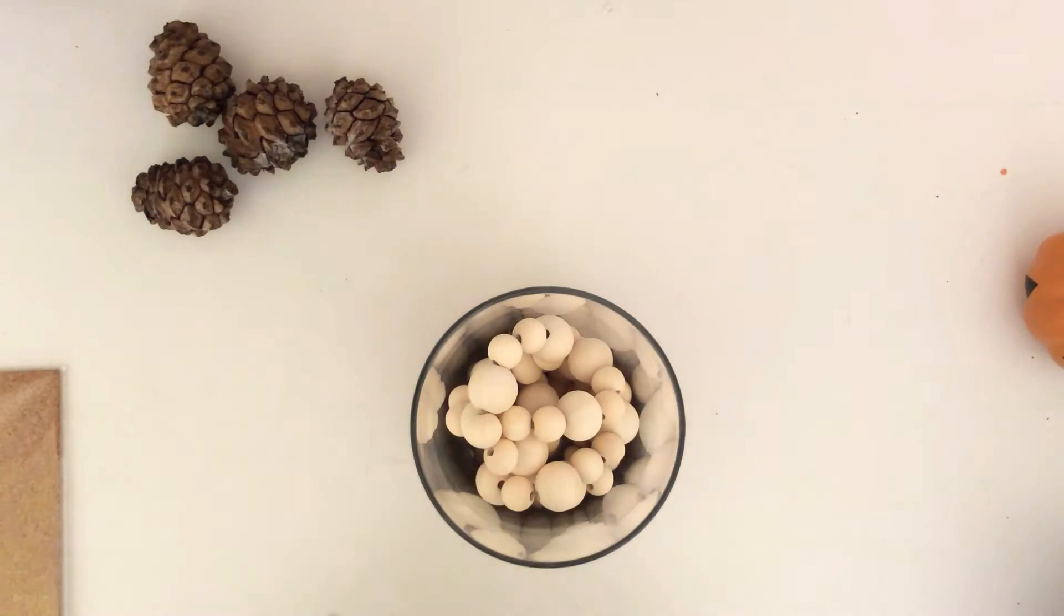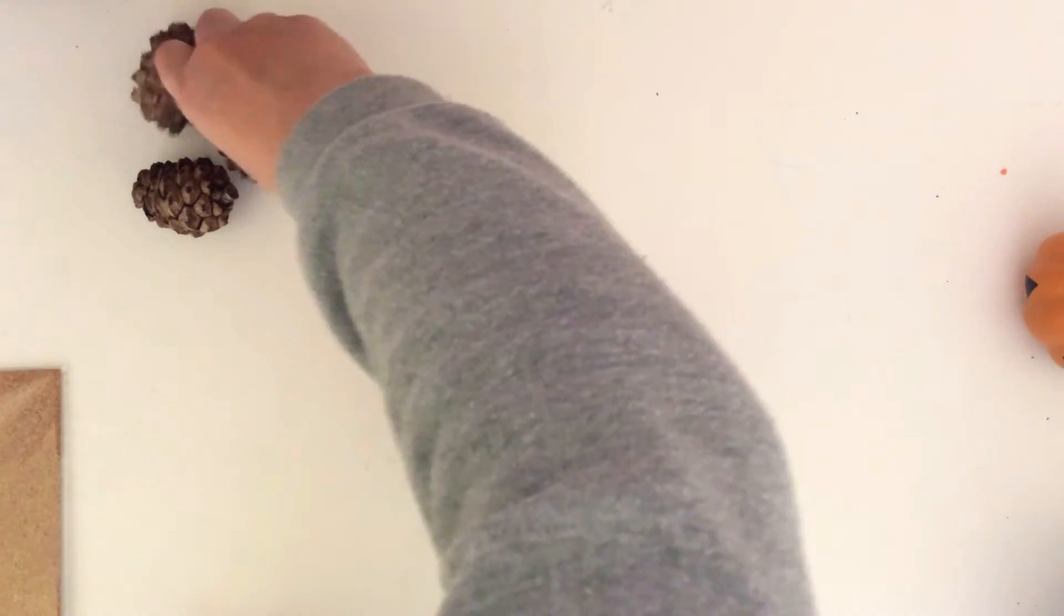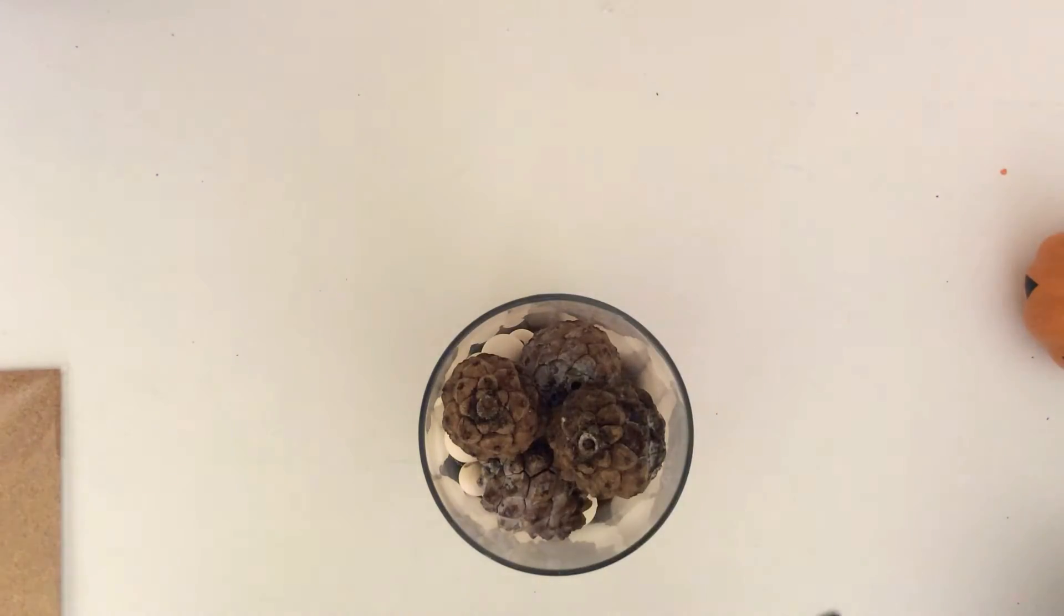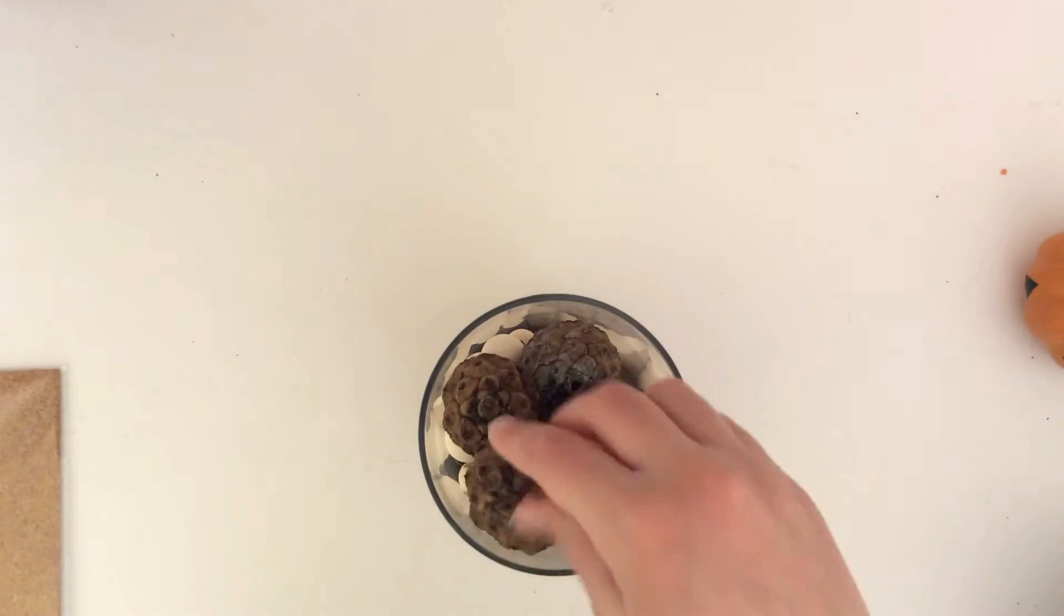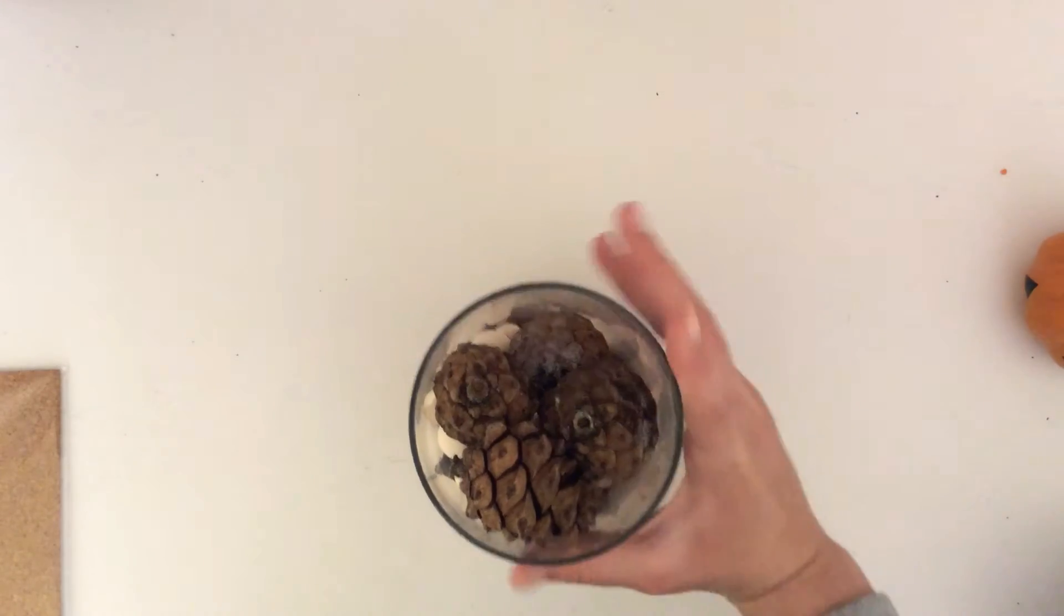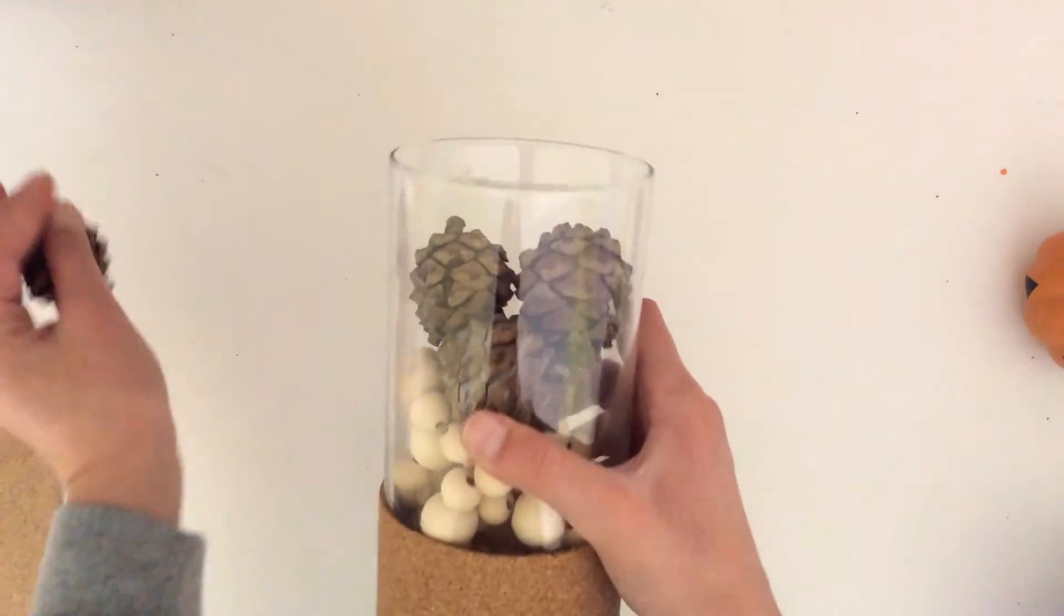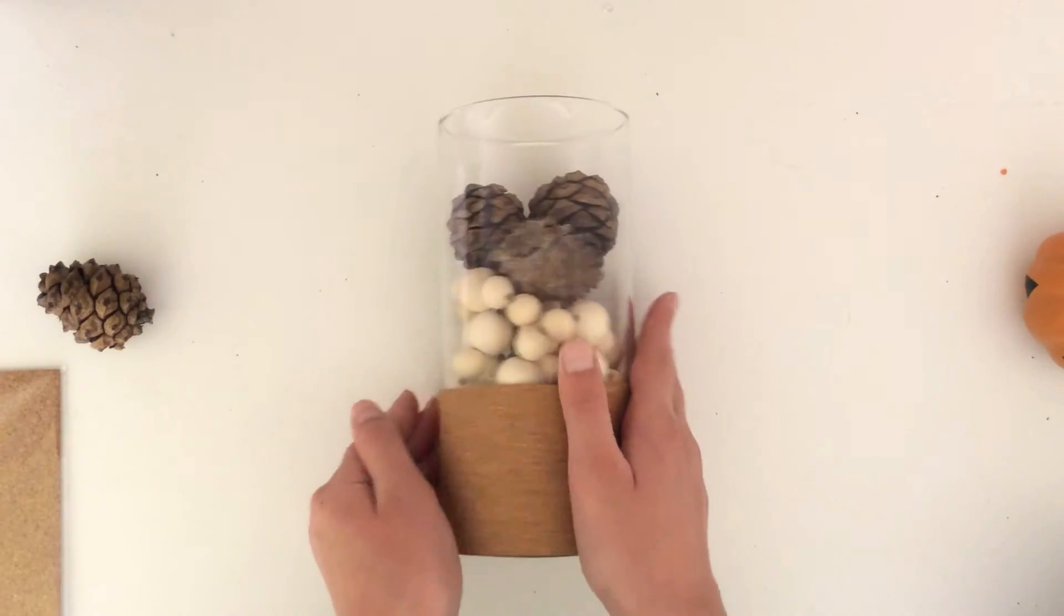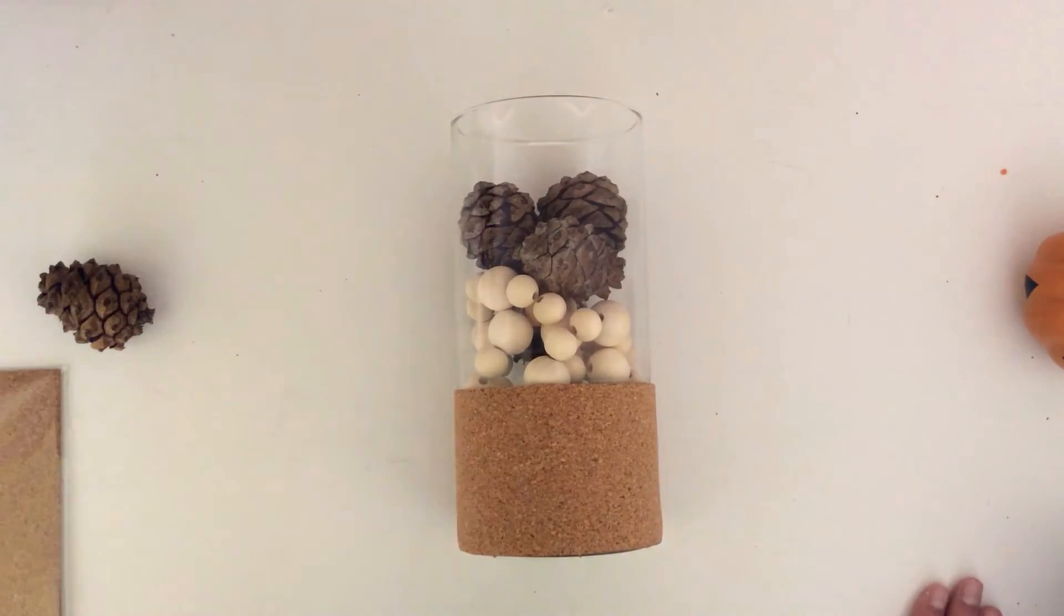Then as you can see, I have my pine cones over here, and I'm just going to place them in one by one. Remember, it doesn't have to be perfect because this is going to look like a pretty natural DIY with the wooden beads, pine cones, and cork. I don't think I'll put this pine cone in, but you can always put any amount of pine cones you want. I'll just keep it in for now. So it looks pretty nice and it's also a very neutral DIY. I'm just really happy with how it turned out.